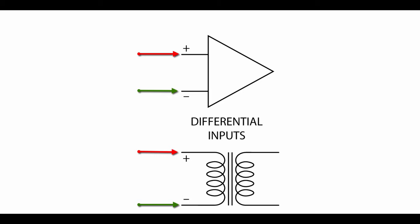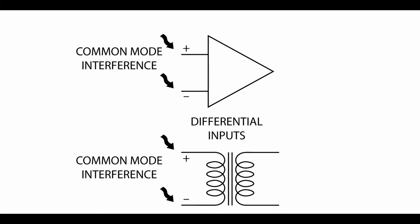Most unwanted noise or spurious signals, such as hum or RF pickup, are imposed upon both the plus and minus audio conductors equally and are called common mode signals.